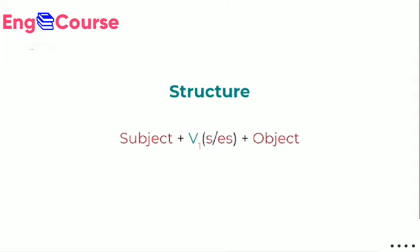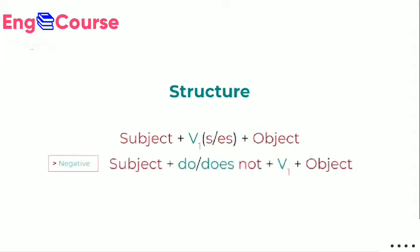In present indefinite tense, the subject is at the start and the object is at the end. The verb comes in the center, and the verb form will be the first form (V1). The important thing is that the first form takes S or ES at the end — this is the second form rule with S and ES.